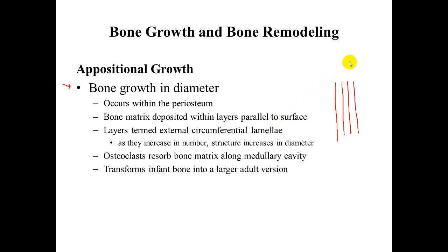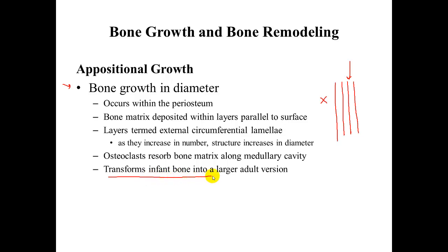As layers are added on the outside, on the inside — in the medullary cavity — osteoclasts are resorbing bone. This process transforms the infant bone into the larger adult version.